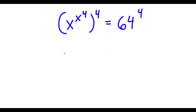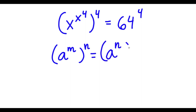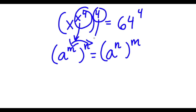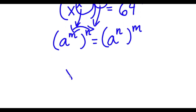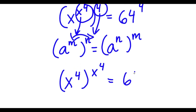If I have something in the form a to the power of m to the power of n, this is the same thing as a to the power of n to the power of m — I can switch the places of m and n. So in this case, x to the power of 4 is m and 4 is n. Switching them, I get x to the power of 4 to the power of x to the power of 4, is equal to 64 to the power of 4.